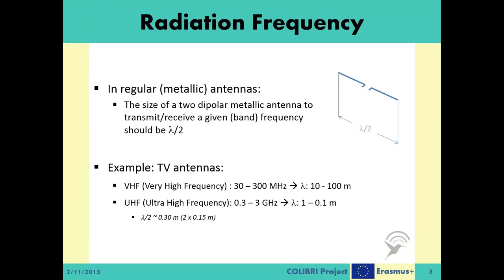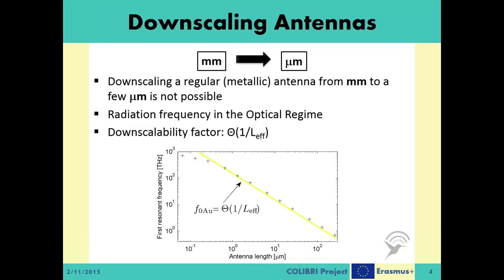Some examples are given with the very high frequency and ultra-high frequency bands. As mentioned in earlier videos, our main motivation to downscale the antennas is the fact that in applications like wireless network-on-chip, we do not have a lot of physical space available to accommodate bigger antennas.